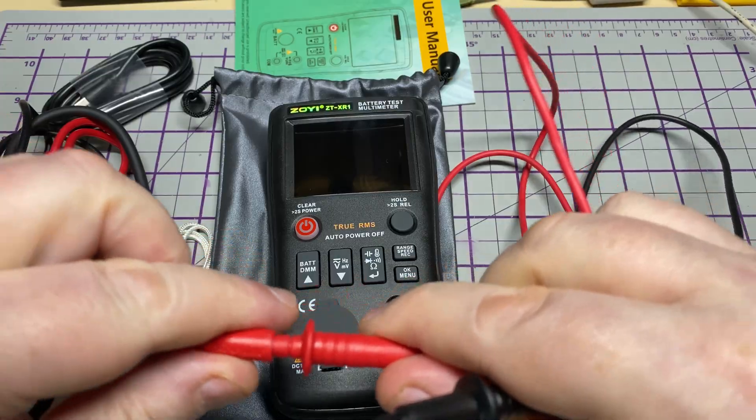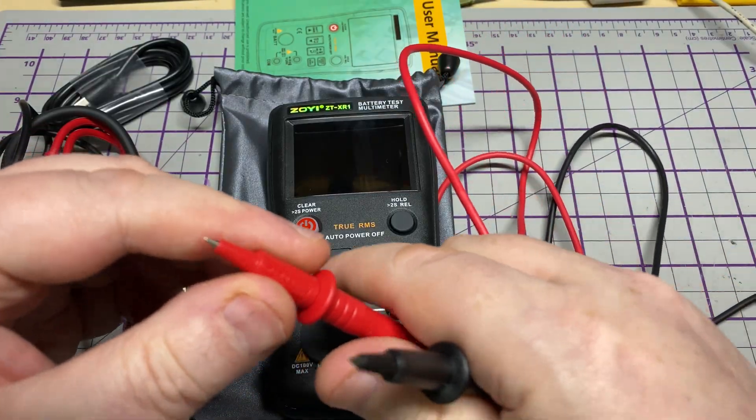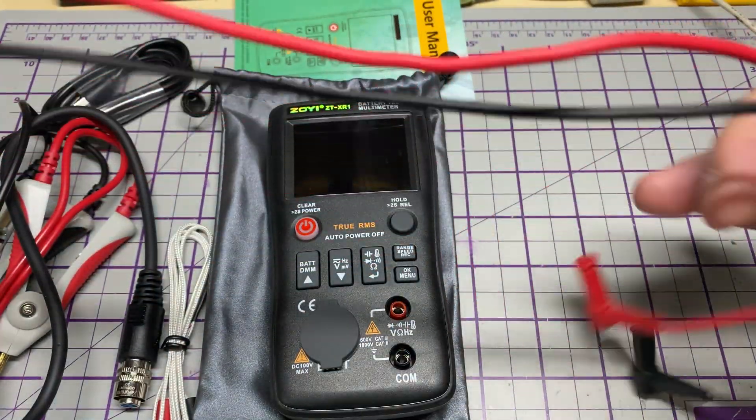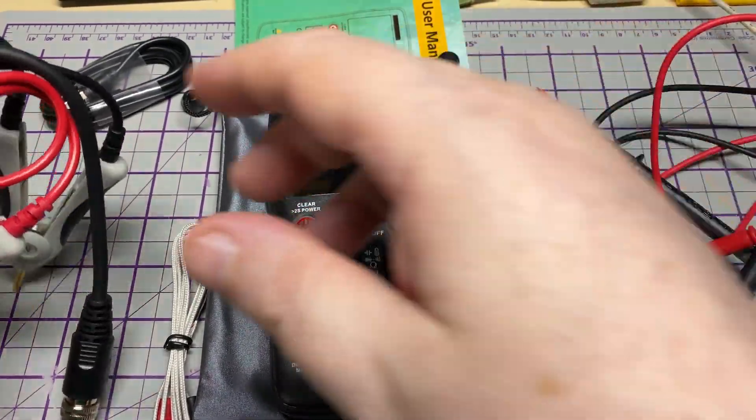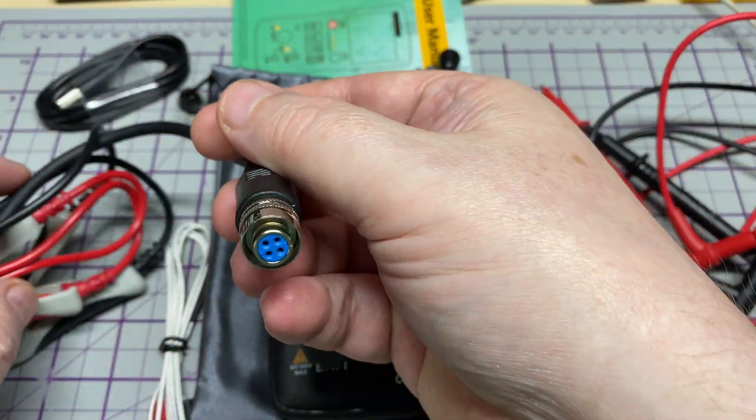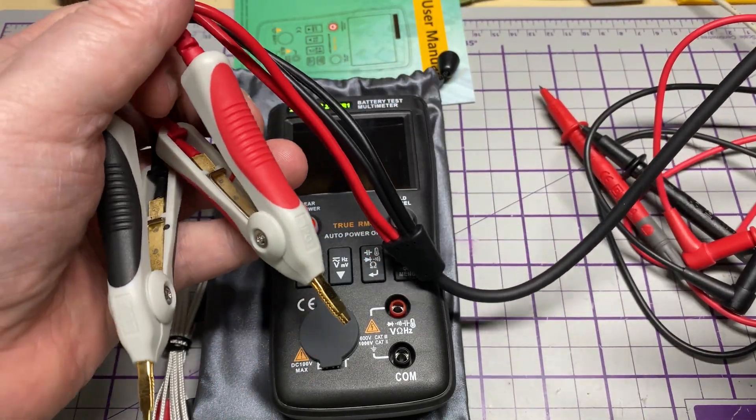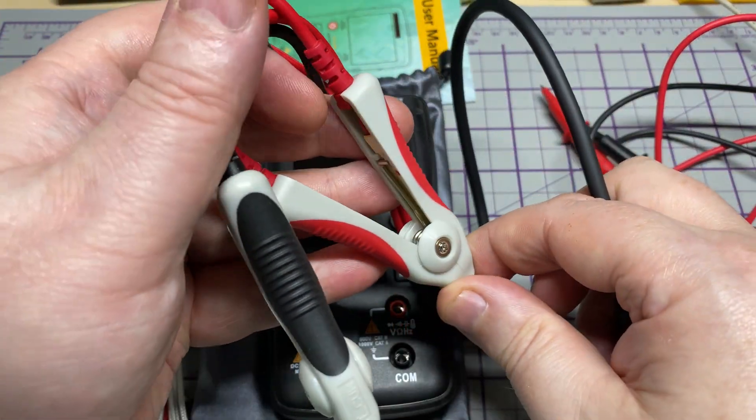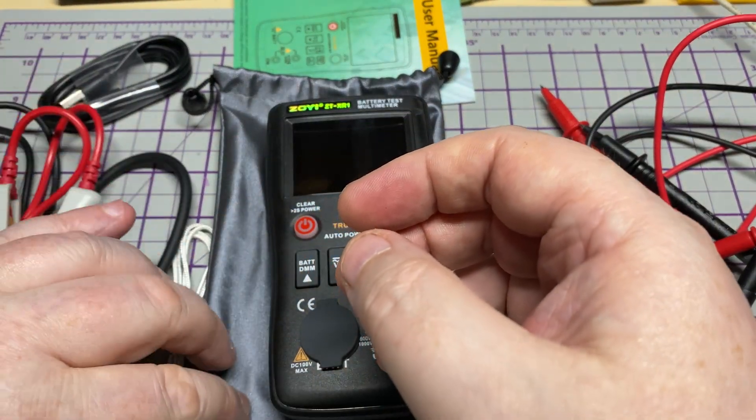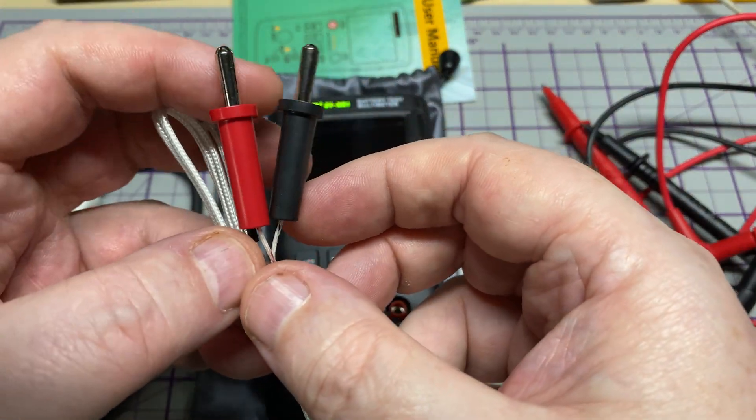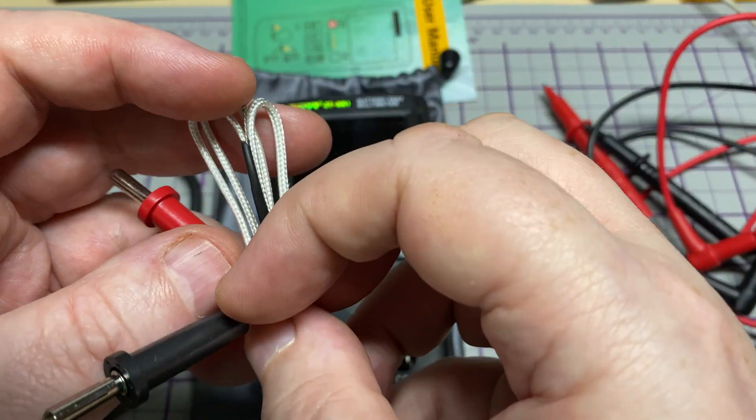Let's have a look at the probes. The normal test meter probes, nothing special there, just normal everyday probes. This is the battery test probe with its four wires and its big clamps and its big plug that goes into the front. And of course we have the temperature test as well.